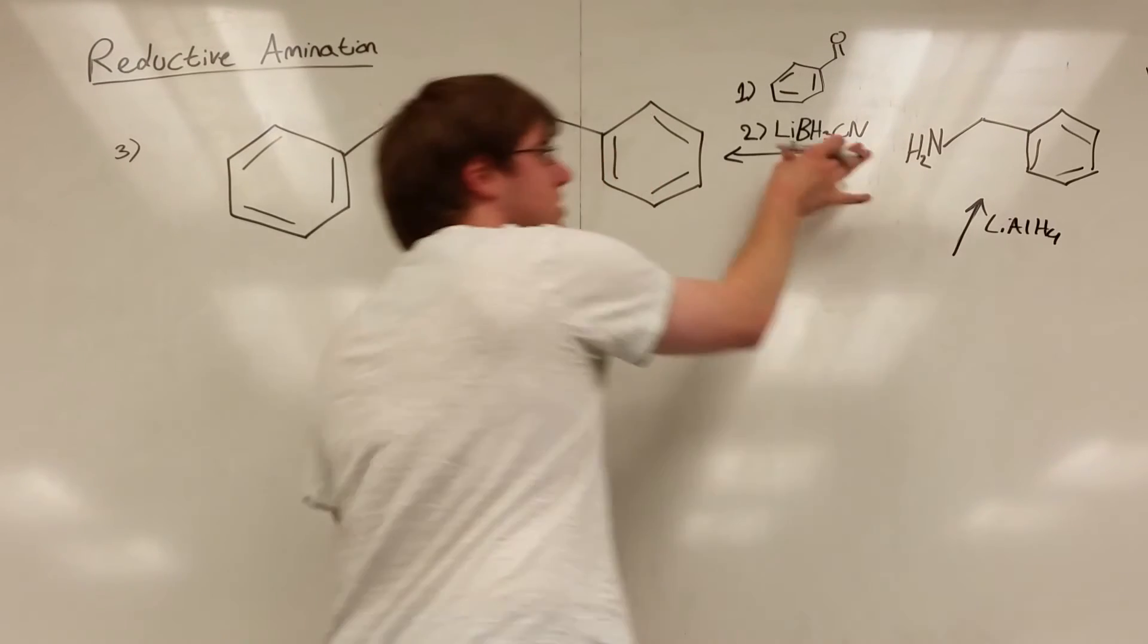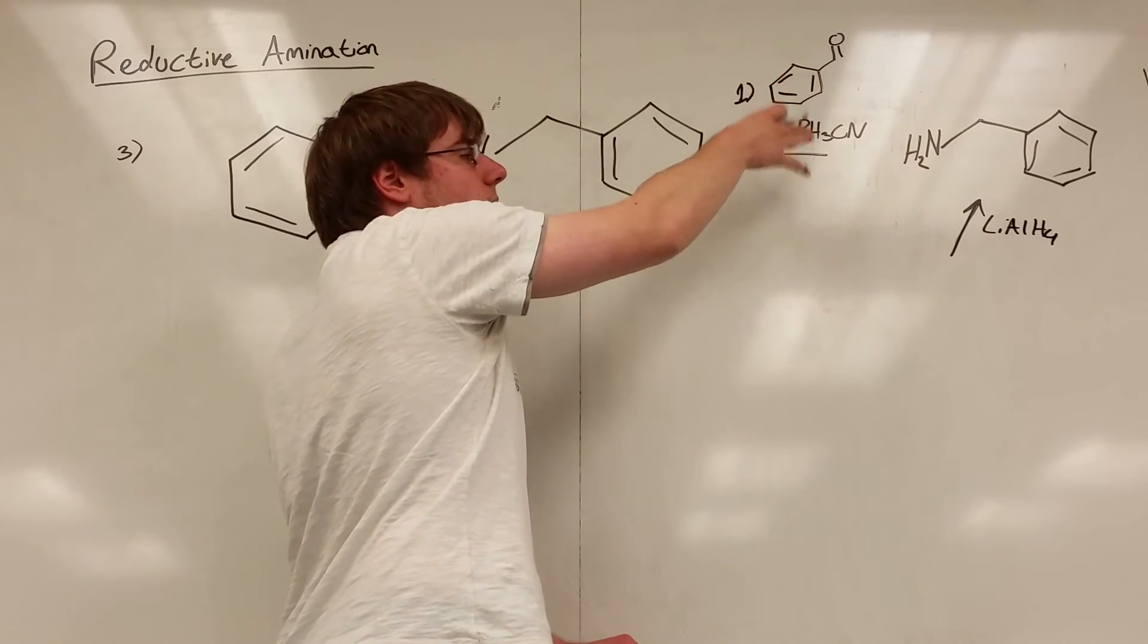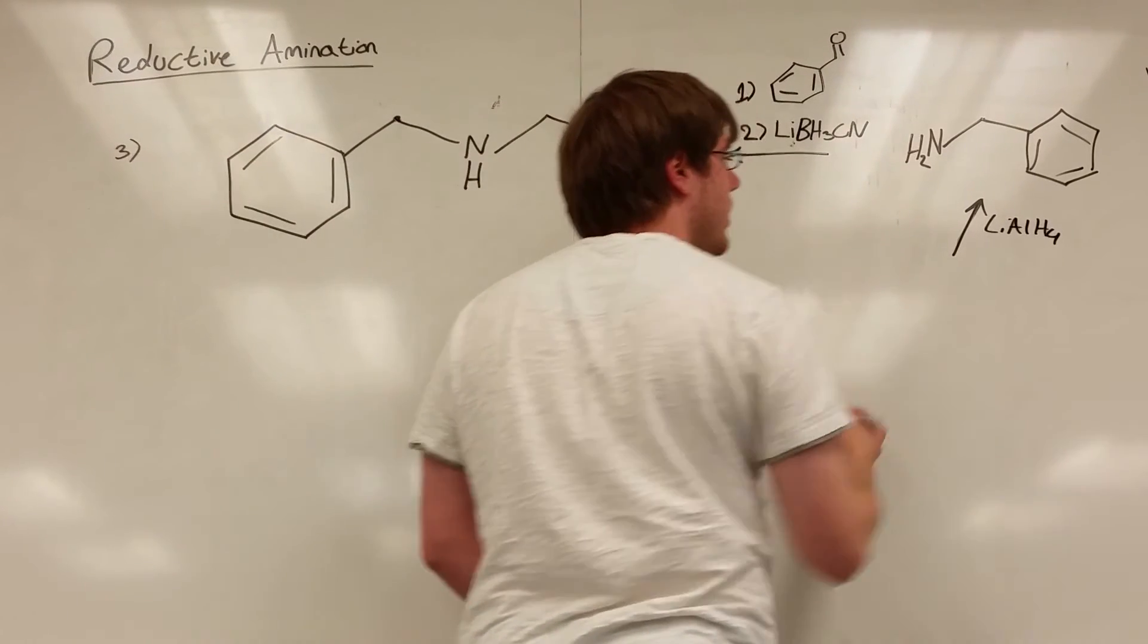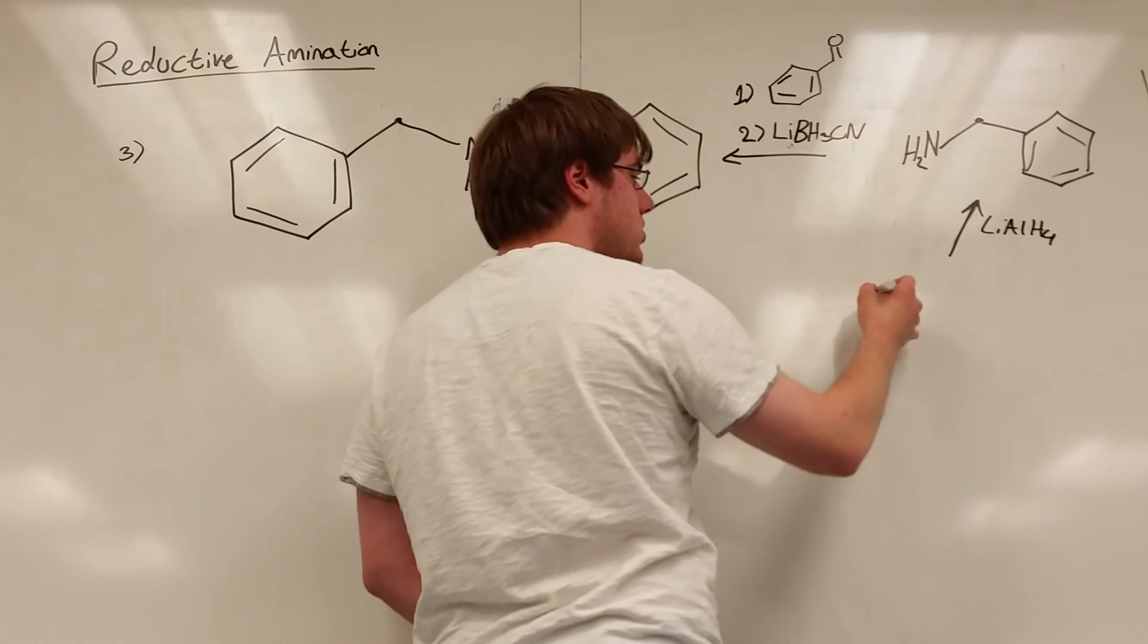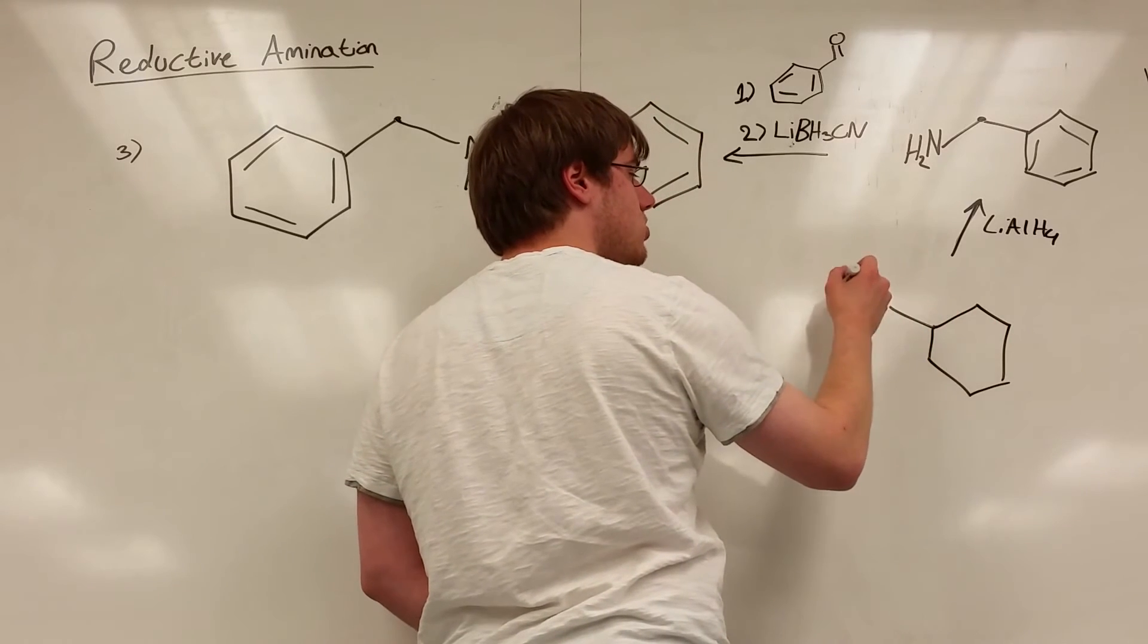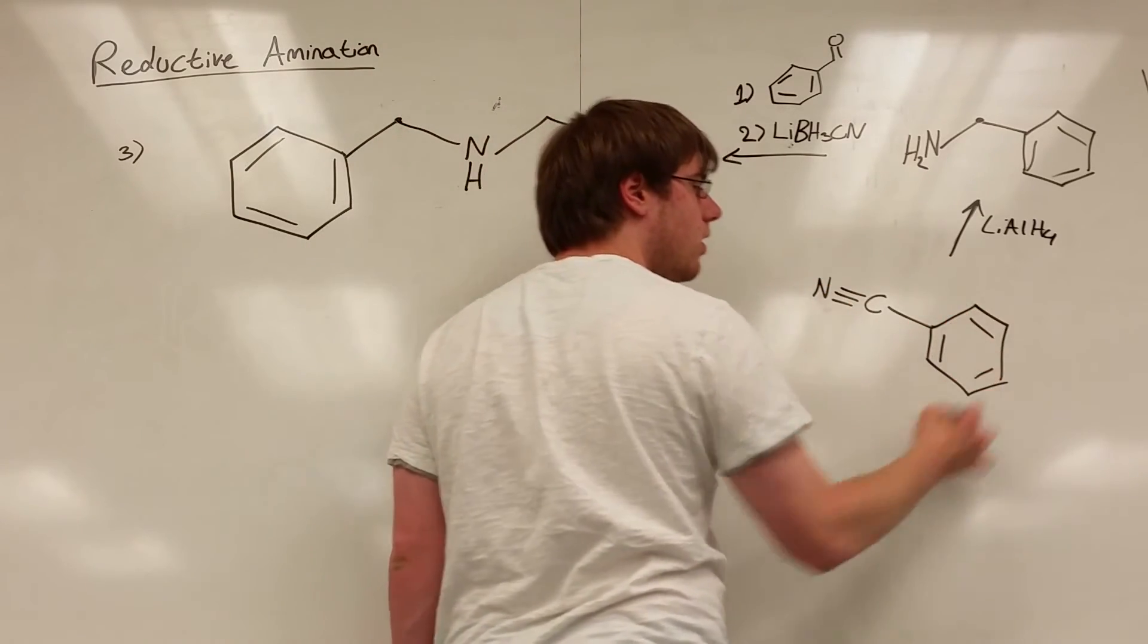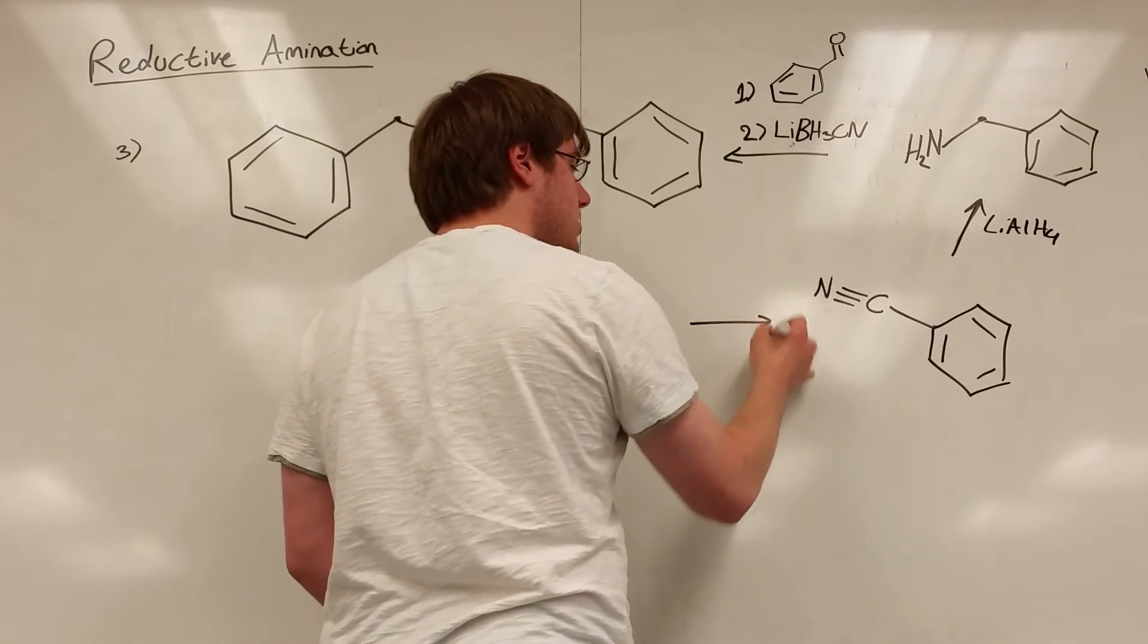And keep in mind, LiAlH4 is not the same thing as LiBH3CN. They are very different reactions. This is very particular to carbon nitrogen double bonds and carbon nitrogen triple bonds. You don't really see it anywhere else. In fact, you mostly see this with just the reductive amination reactions. And so LiAlH4, what I'm going to go backwards to is this carbon over here will now be in a triple bond with the nitrogen. So I have the benzene. I have C triple bond N. So nitrogen will be neutral because it has three bonds, no more hydrogens.